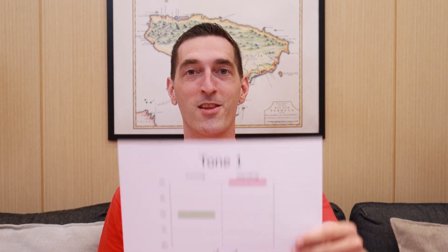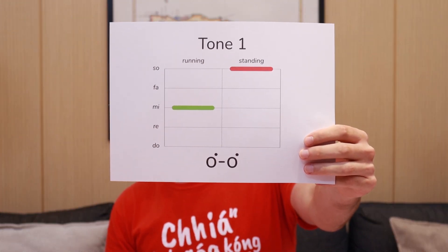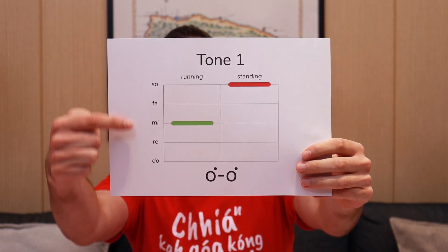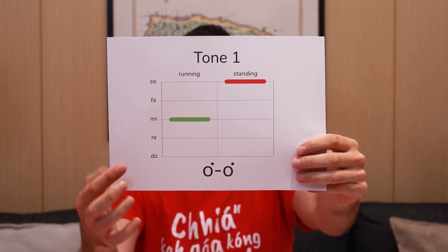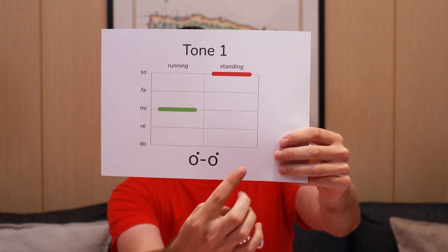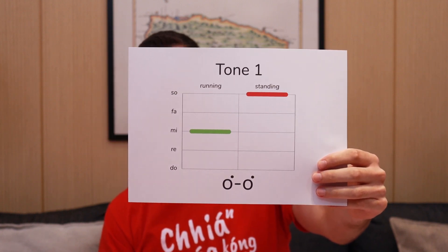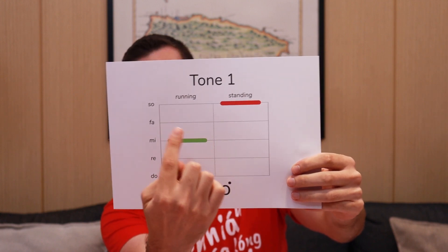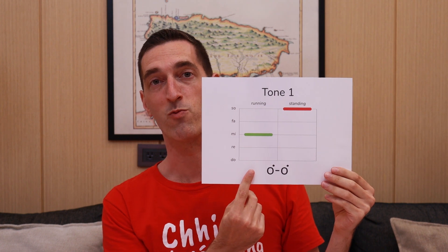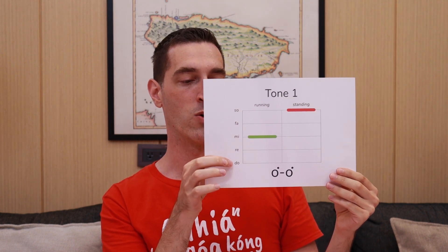For Taigi, the left track is going to be called the running tone and the right track is going to be called the standing tone. Let's take a look at tone number one. This is basically just a pitch diagram, like a music staff. So these are our pitches — do, re, mi, fa, so — and you can see where each tone is on the staff, what pitch it has. These are both flat tones.